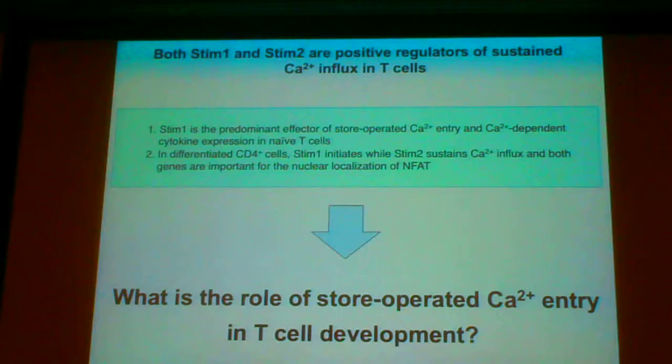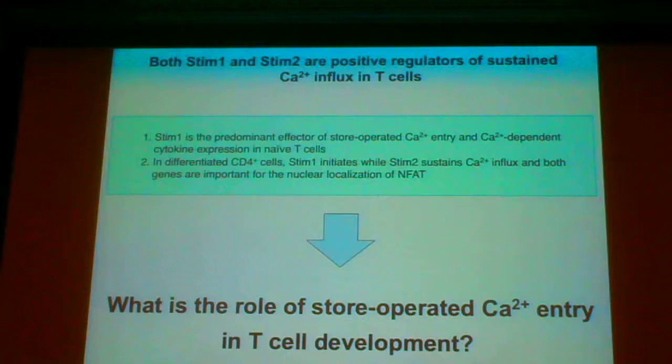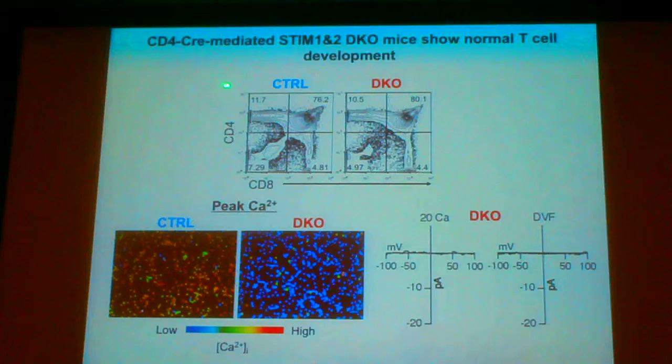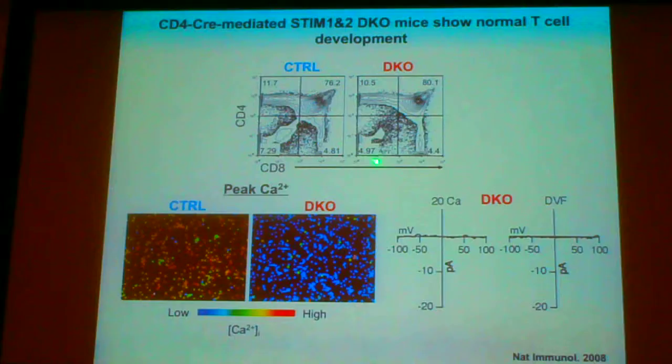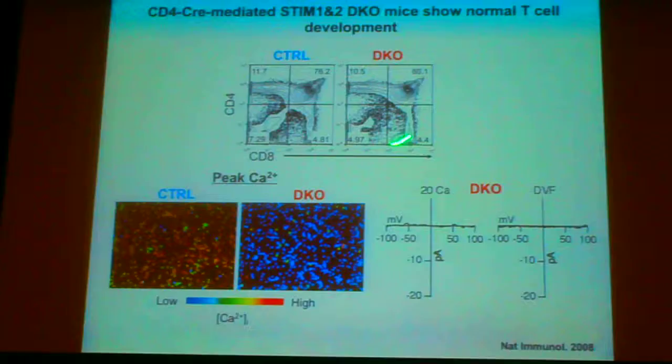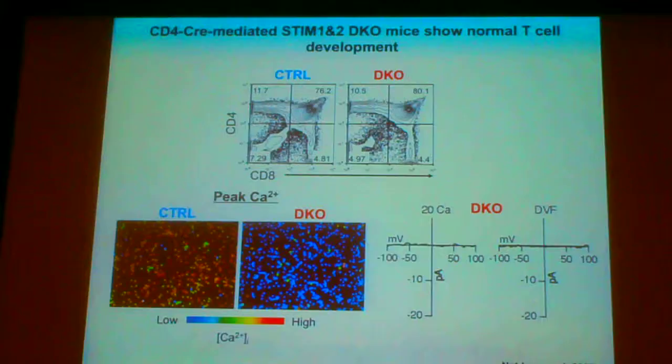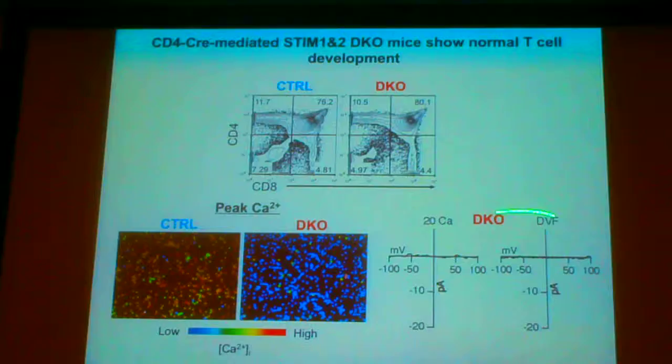So what is the role of store-operated calcium entry in T cell development? We first established STIM1 and STIM2 double-deficient mice using CD4-Cre mice. Here you can see that double knockout mice show normal T cell development as judged by the CD4-CD8 profile, despite the complete defect of store-operated calcium entry and CRAC channels.